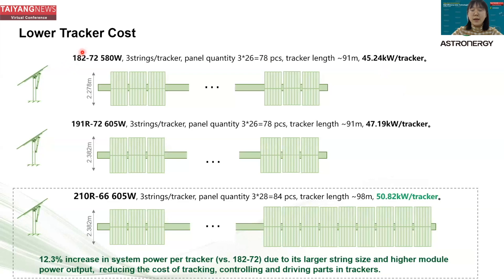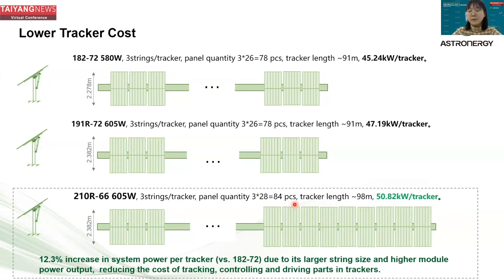This slide shows why a larger string size can reduce the tracker cost. For a horizontal single-axis tracker, we can generally have three strings per tracker. With a larger string size, we can increase the panel quantity per tracker and also the power capacity per tracker. Each tracker needs a set of tracking, controlling, and driving parts, and the cost of these parts can be reduced with larger capacity. That's why 210 rectangular 66 has a lower tracker cost.